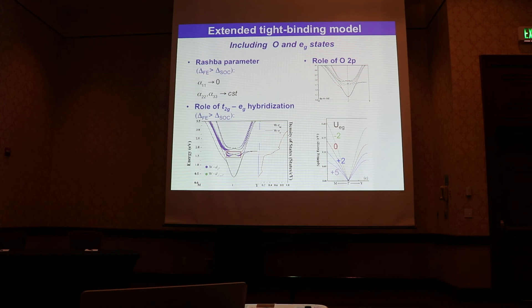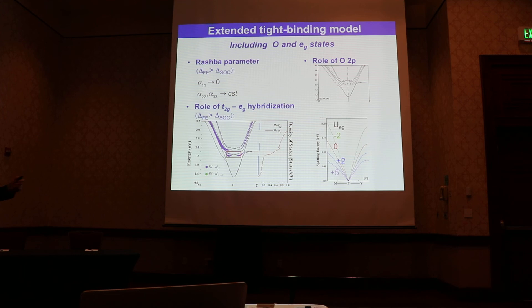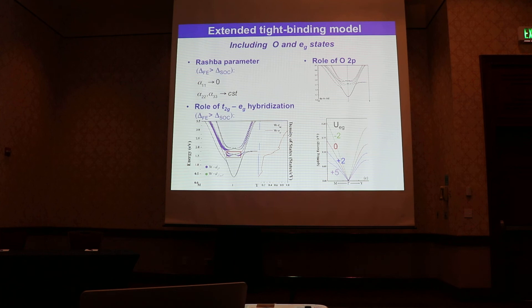Paolo Barone then extended the model to include hybridization with oxygen P states or EG states. With this extension, it becomes clear that the lowest band shows no or very small Rashba splitting, while the two upper states show sizable splitting. We initially wondered whether the oxygen spin-orbit coupling was responsible, but switching off spin-orbit coupling on the oxygen P states produced no change in the band structure. Instead, tuning the position of the EG levels by applying a Hubbard U parameter allowed us to tune the amplitude of the Rashba splitting in those two bands. This confirms that the origin of the Rashba splitting is hybridization with the EG states.